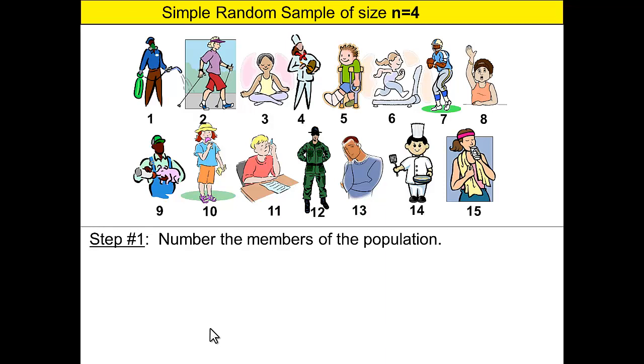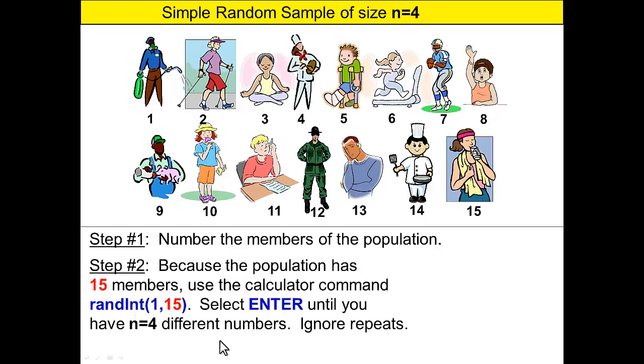Remember the order in which you do so is not important. It is the fact that every member of the population must be numbered. Step number two: because the population has 15 members, use the calculator command random integer one comma 15. Then press enter until you have four different numbers since we need a sample size of four, ignoring any repeats.